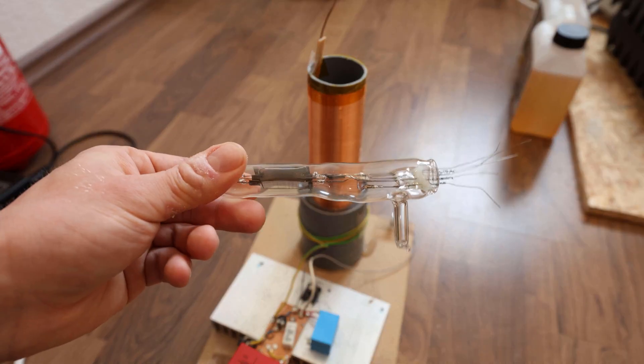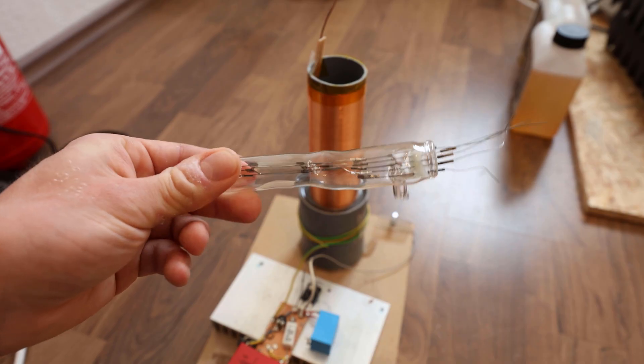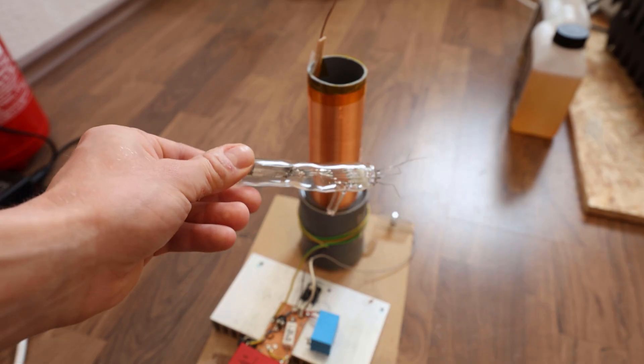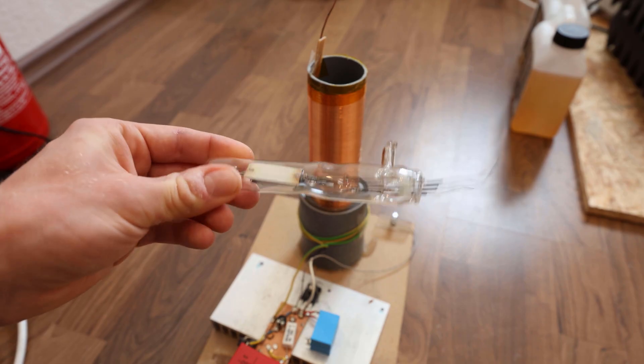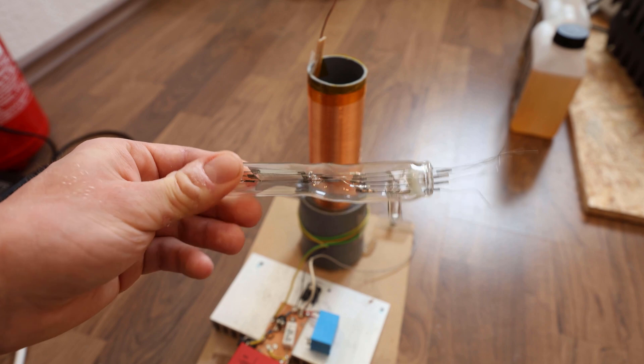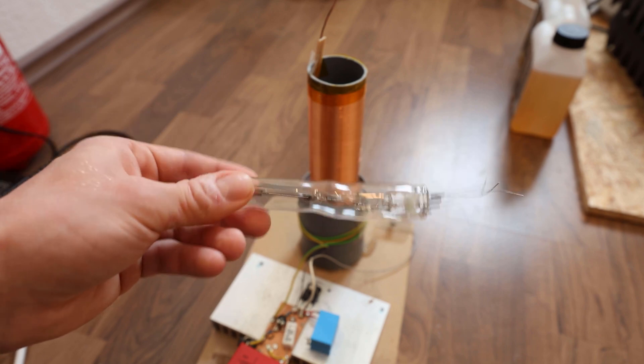Alright, the tube is sealed. And to check if it leaked, I will turn on this Tesla coil right here and I will hold it onto the Tesla coil. And if there's any gas inside, I will see this because it will be glowing. It will get excited by the Tesla coil.